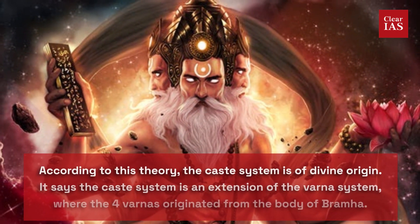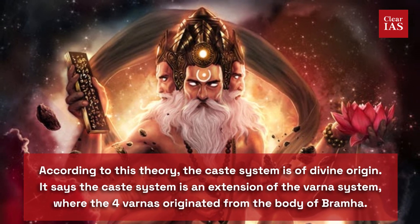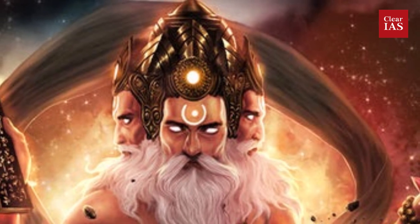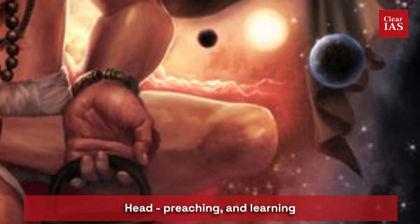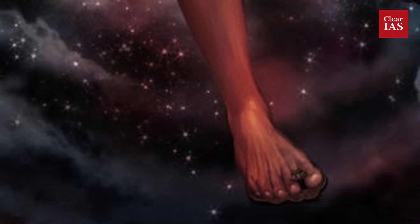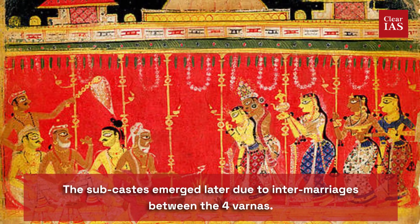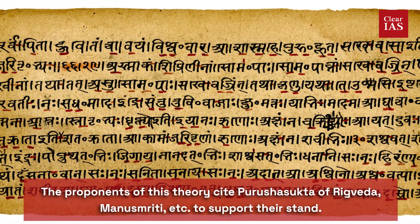According to the traditional theory, the caste system is of divine origin. It says that the caste system is an extension of the Varna system, where the four Varnas originated from the body of Brahma. At the top of the hierarchy were the Brahmins, who were mainly teachers and intellectuals, and came from Brahma's head. Kshatriyas, or the warriors and rulers, came from his arms. Vaishyas, or the traders, were created from his thighs. At the bottom were the Shudras, who came from Brahma's feet. The sub-castes emerged later due to intermarriages between these four Varnas. The proponents of this theory cite the Purusha Sukta of the Rig Veda and Manu Smriti to support their stand.